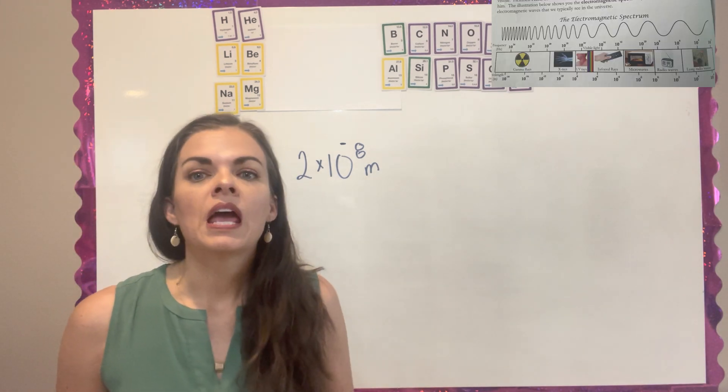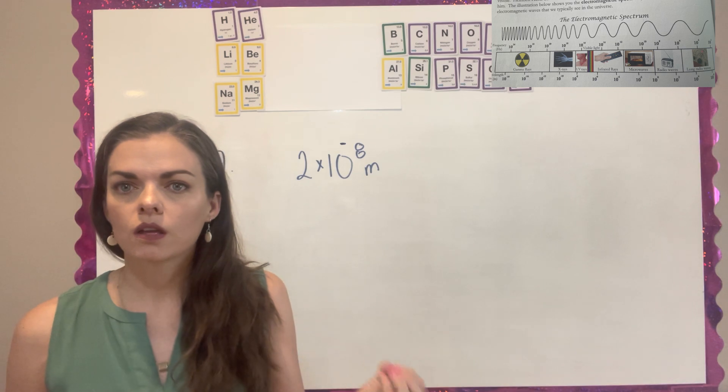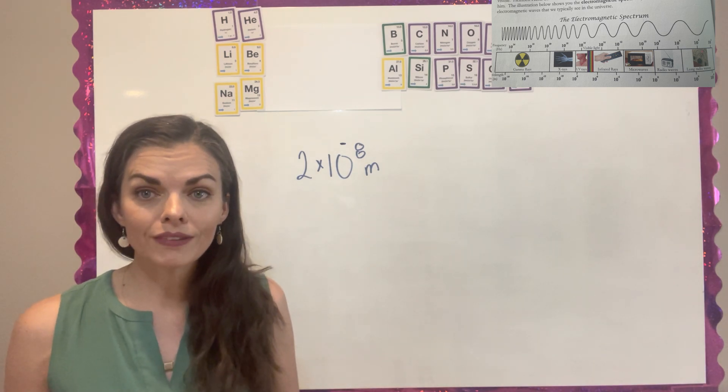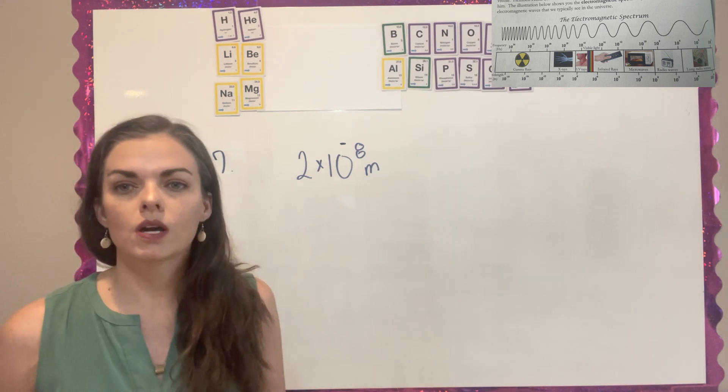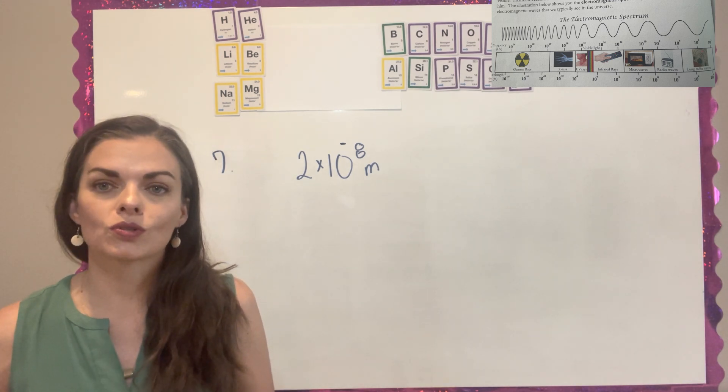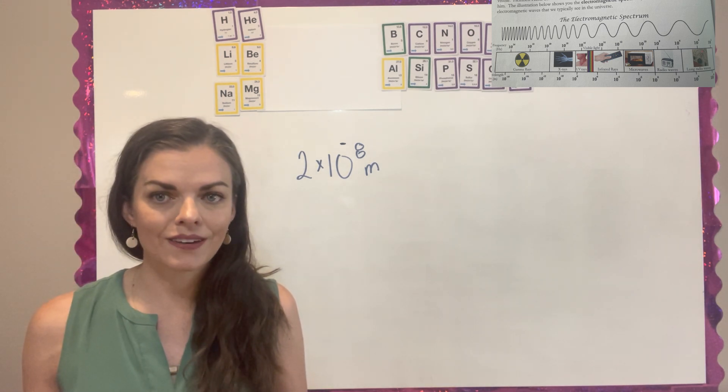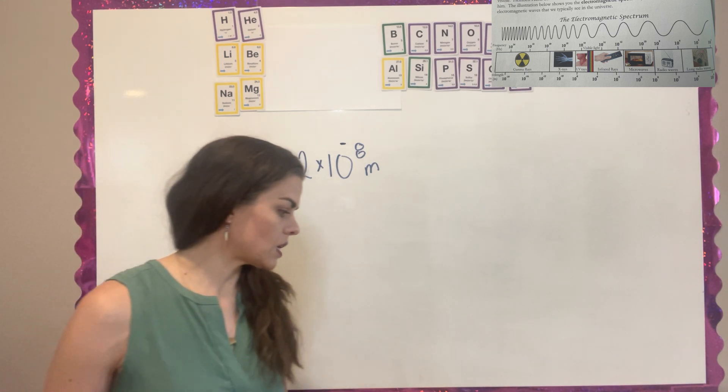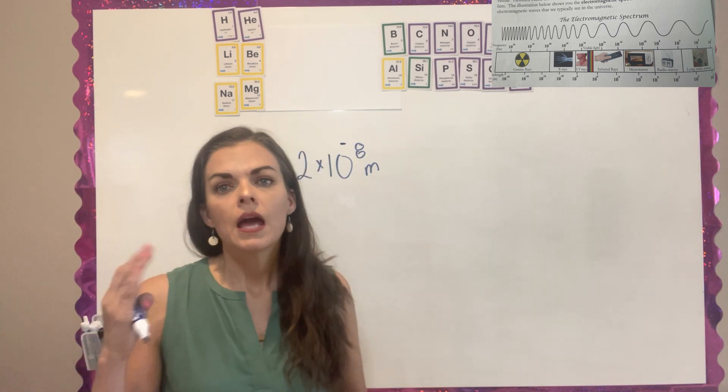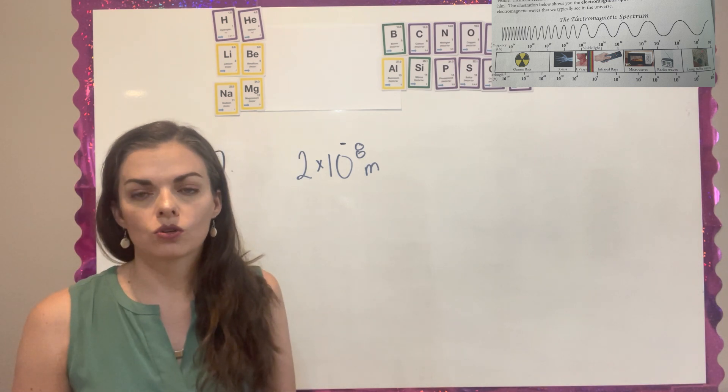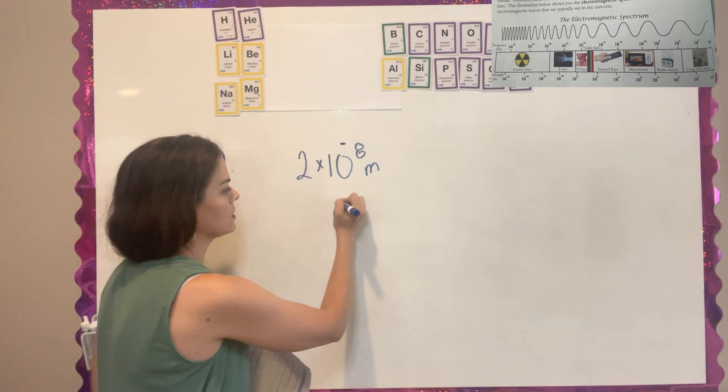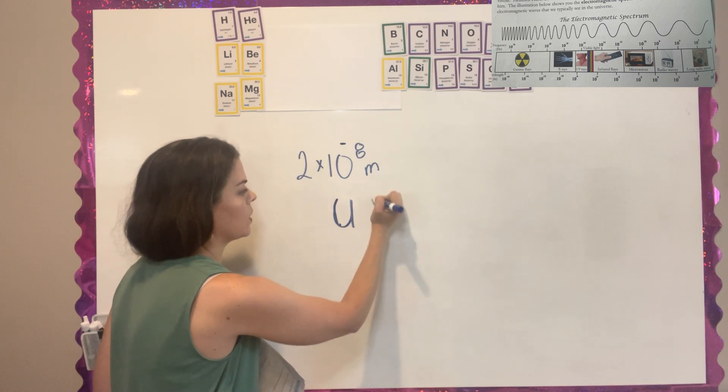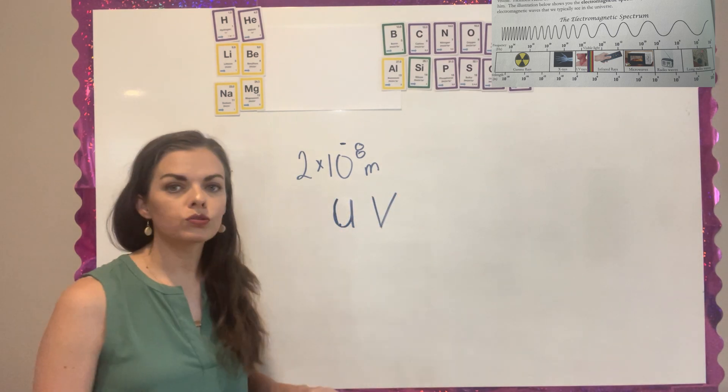It's asking you to use the spectrum on page 78 to figure out what these waves are called. I'm going to add the spectrum above, and you're basically just going to be looking on this spectrum under wavelength until you see 10 to the negative 8. You're not going to be seeing 2 times of it, but you're just looking at something times 10 to the negative 8. Look on this spectrum - the top part says frequency, and the bottom is wavelength. You're going to find that around the negative 8 wavelength is ultraviolet light.